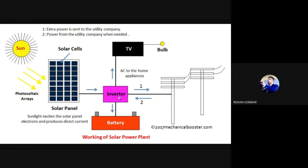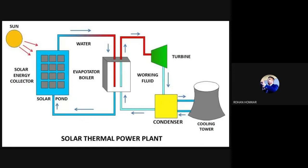You need to draw this diagram in your notebook. I will give you one minute — take a screenshot and draw it. Note that in the diagram you need to add the alternator, so the turbine will act as a prime mover connected to the alternator which generates electricity. Now, a solar pond is basically for storing solar energy in liquid format, where the heated liquid is stored.